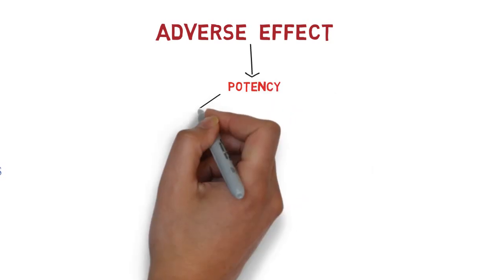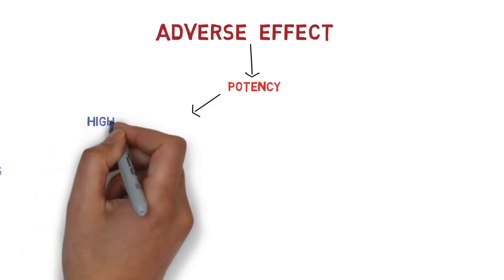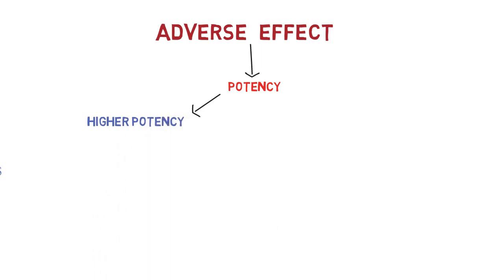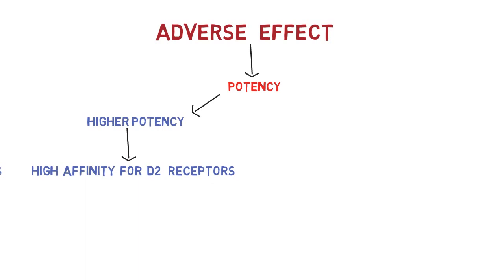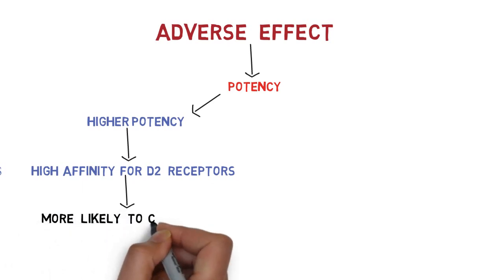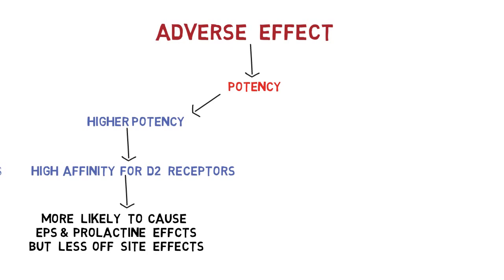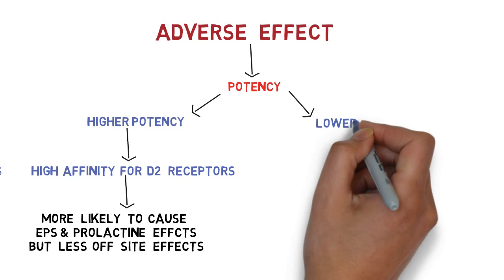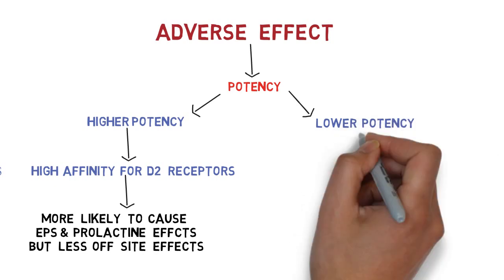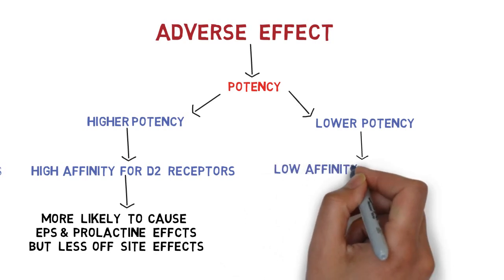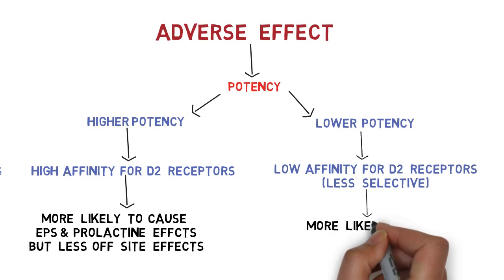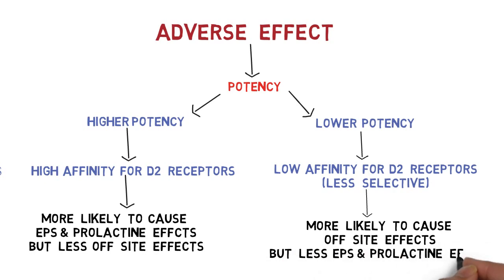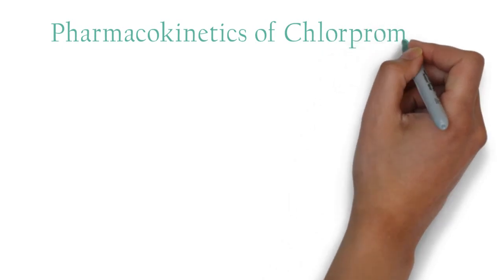These adverse effects can also be understood in terms of drug potency — the minimum concentration required to produce an effect. A high-potency drug has high affinity for D2 receptors and therefore shows more on-site side effects such as extrapyramidal symptoms and prolactin-related effects. A low-potency drug has less selectivity for D2 receptors due to lower affinity, so it blocks more adrenergic and cholinergic receptors, producing more off-site adverse effects than EPS or prolactin effects.